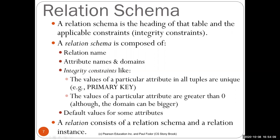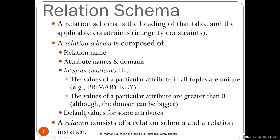There are also cardinality constraints — for instance, attribute values must be greater than zero even if the domain is larger, like IDs or ages being positive. You can also declare default values for some attributes — for example, the default status for a student is freshman. A relation consists of the relation schema plus the relation instance, which are all the tuples belonging to that relation.